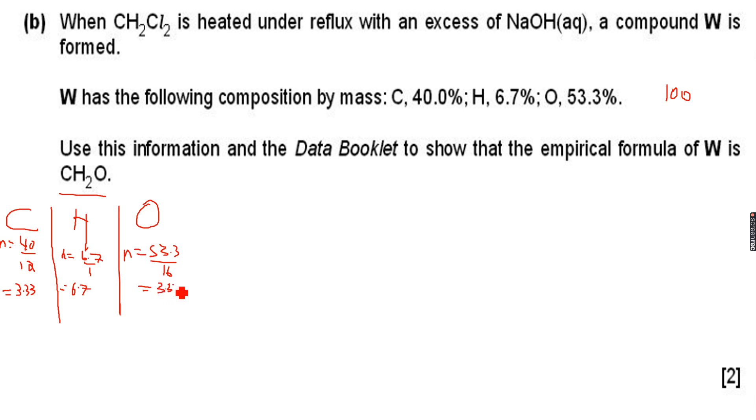The lowest number of moles is 3.33. So I have this ratio: 3.33 is to 6.7 is to 3.33. I divide all three by 3.33. So I get 1 is to 2 is to 1, which is the simplest whole number ratio.